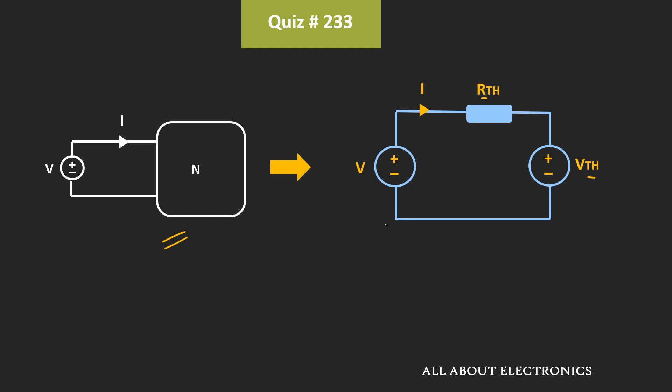So if we apply the KVL, then we can write, this voltage V is equal to Rth times I plus Vth.